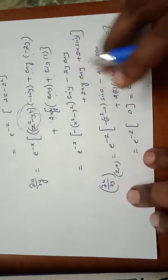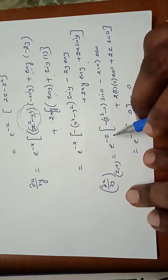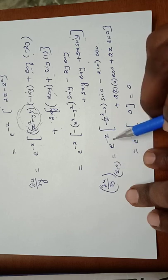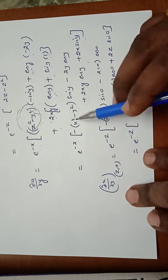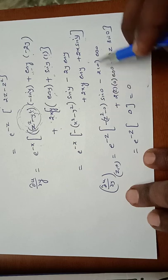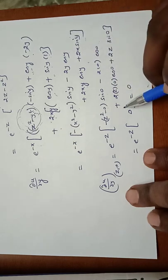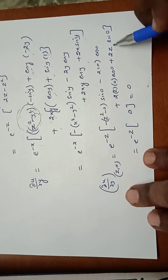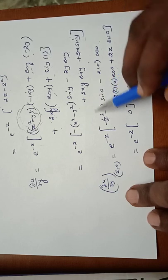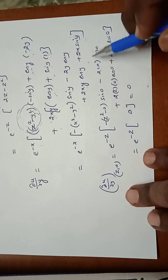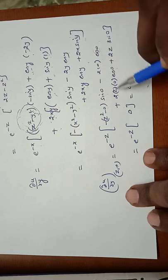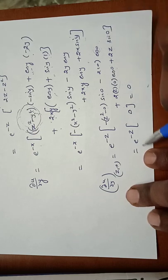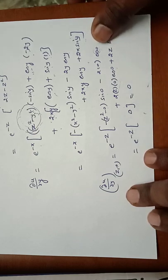To evaluate ∂u/∂y at (z, 0), substitute x = z and y = 0. With sin(0) = 0 and cos(0) = 1: the term -(z² - 0)·sin(0) = 0, the term -2(0)·cos(0) = 0, and 2z·cos(0) gives 2z, but sin(0) = 0 makes the last term vanish. So e^(-z) times 0 equals 0, meaning ∂u/∂y at (z, 0) = 0.